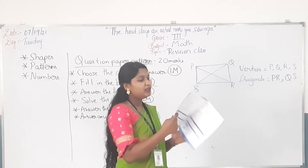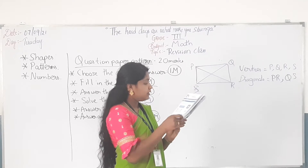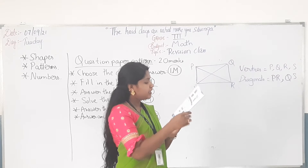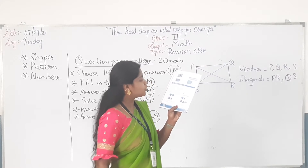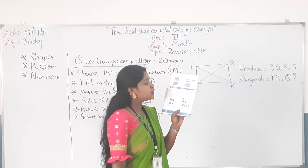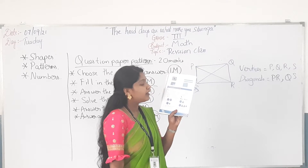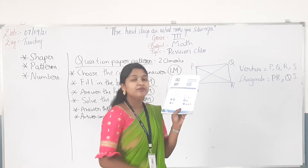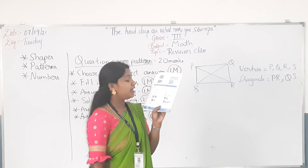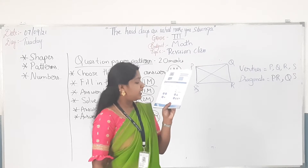Now open the next chapter: patterns. See page number 8, fourth question. Which of the following patterns shows the alternate circle and triangle? The answer is option A.